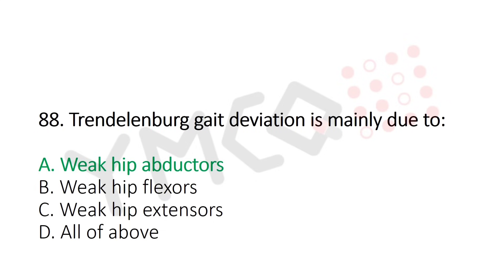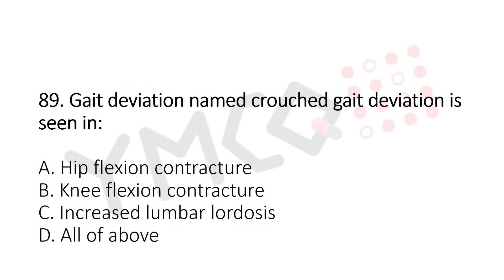Question 89: Gait deviation named crossed gait deviation is seen in — option A: hip flexion contracture, option B: knee flexion contracture, option C: increased lumbar lordosis, option D: all of the above. The answer is option D: all of the above.